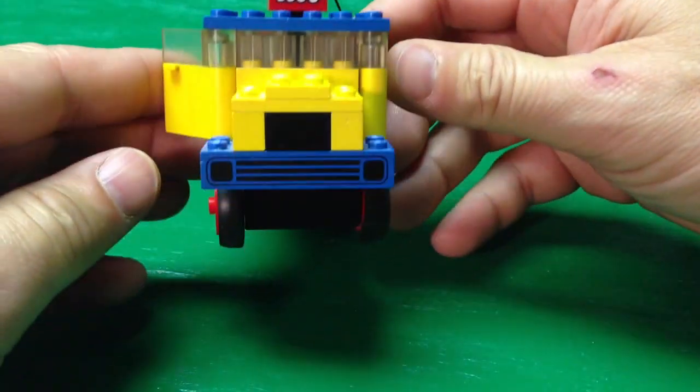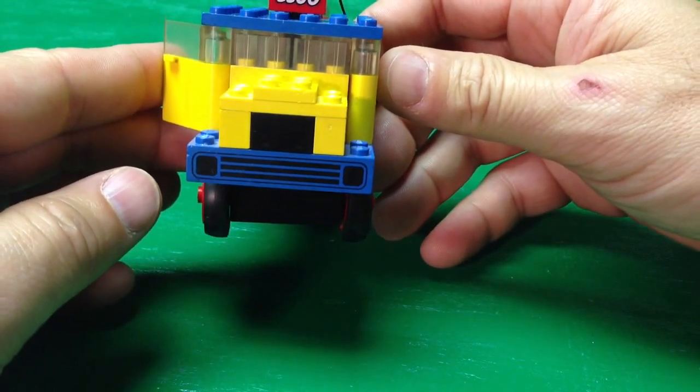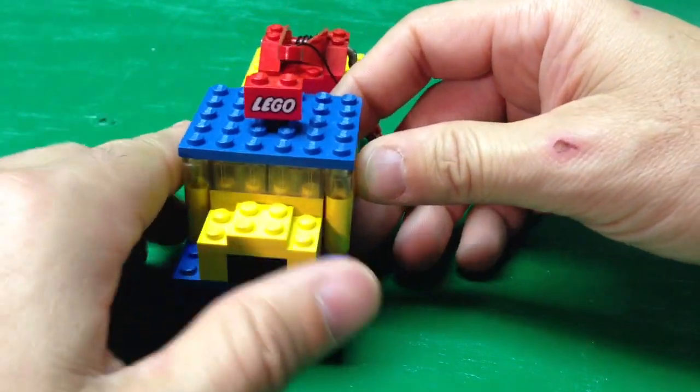On the front it has the grill, which is just a black print, no stickers on any of this.